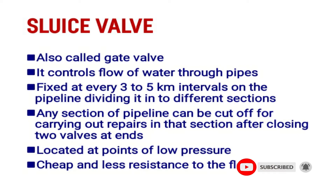The sluice valve is also called a gate valve. It controls the flow of water through pipes. Sluice valves are fixed at every three to five kilometer intervals on the pipeline, dividing it into different sections.